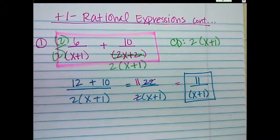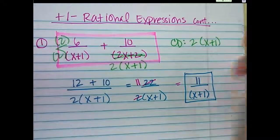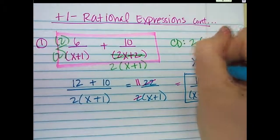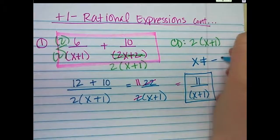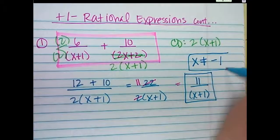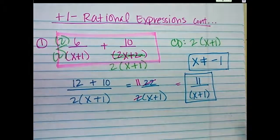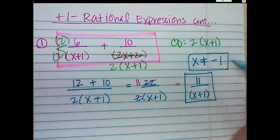What are our restrictions? After I find the common denominator I usually don't do the restrictions — I just forgot. So what is our restriction? Negative 1. So x equals negative 1. If the number is by itself, we don't care — only if there's a variable there.